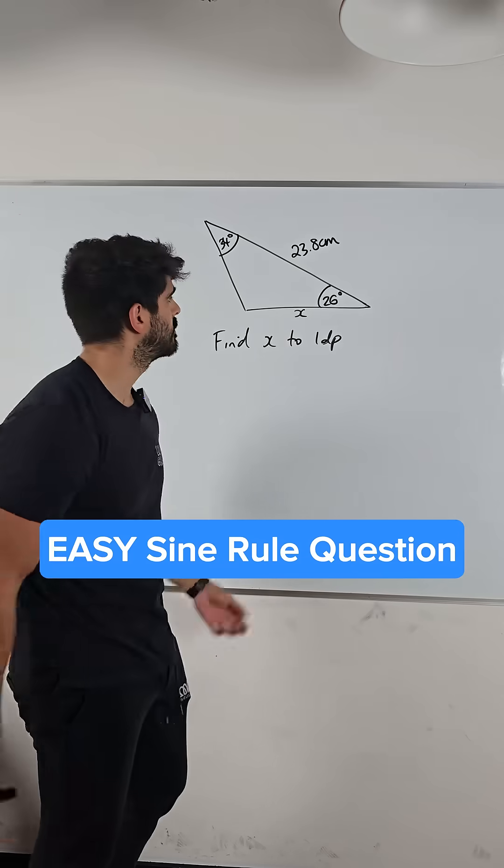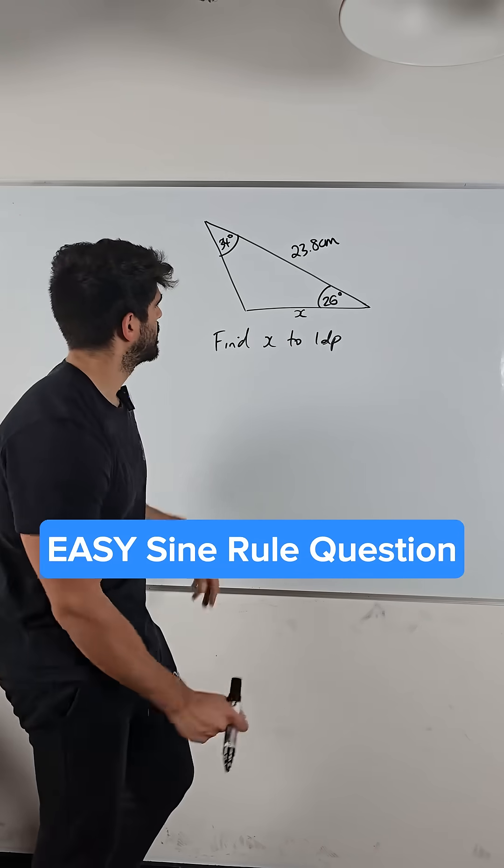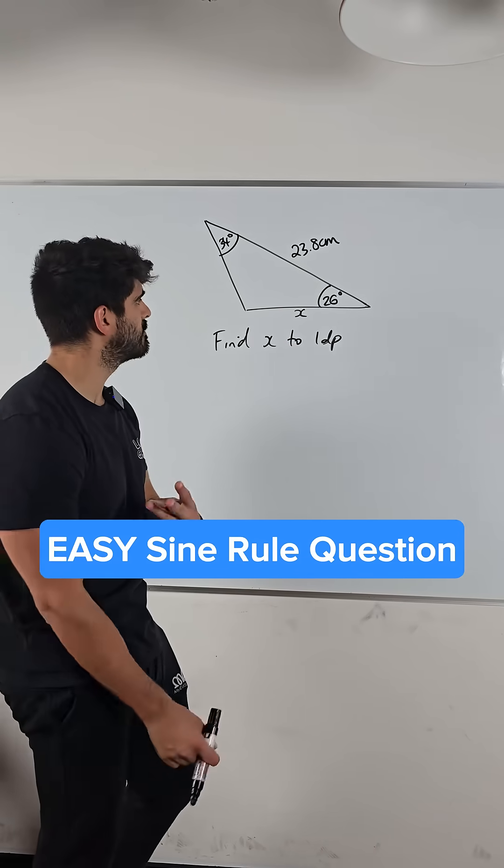Easy peasy, squeeze the lemon, sine rule question. Find x to one decimal place for three marks.